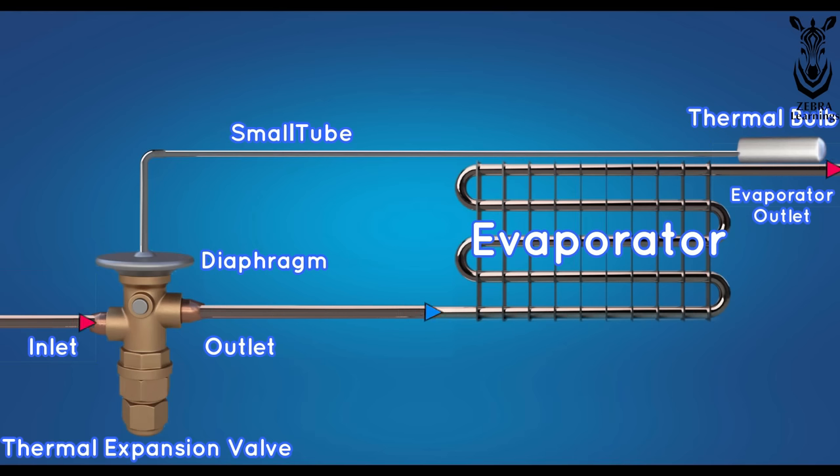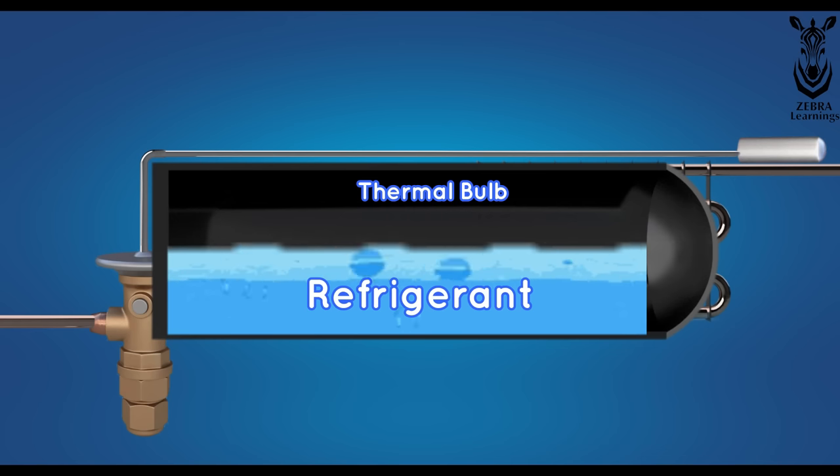The refrigerant that enters the evaporator is heated and converted into vapor and exits. When the outlet heats up, heat is transferred to the thermal bulb. At that time, the refrigerant inside the thermal bulb will begin to boil and turn into vapor.